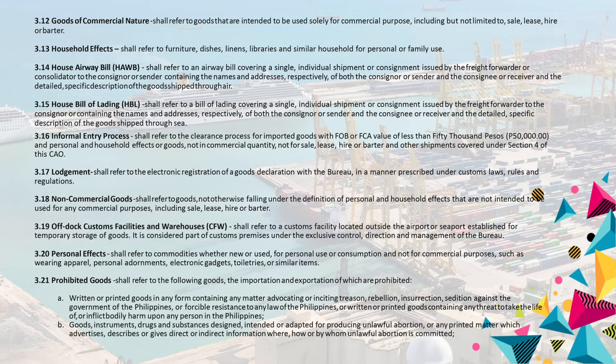3.21 Prohibited goods shall refer to the following goods, the importation and exportation of which are prohibited: a. Written or printed goods in any form containing any matter advocating or inciting treason, rebellion, insurrection, sedition against the government of the Philippines, or forcible resistance to any law of the Philippines, or written or printed goods containing any threat to take the life of or inflict bodily harm upon any person in the Philippines. b. Goods, instruments, drugs, and substances designed, intended or adapted for producing unlawful abortion, or any printed matter which advertises, describes, or gives direct or indirect information where, how or by whom unlawful abortion is committed.